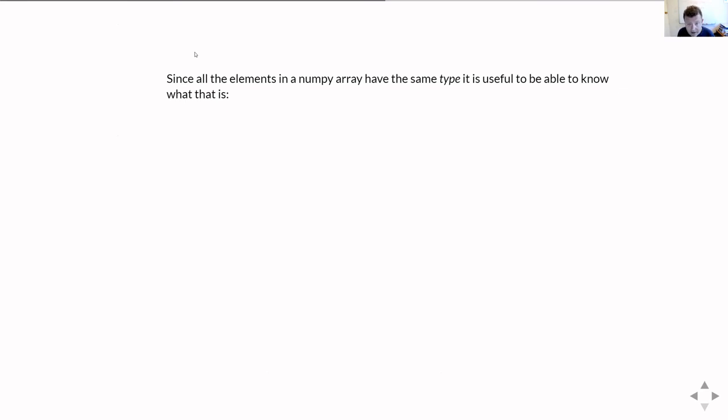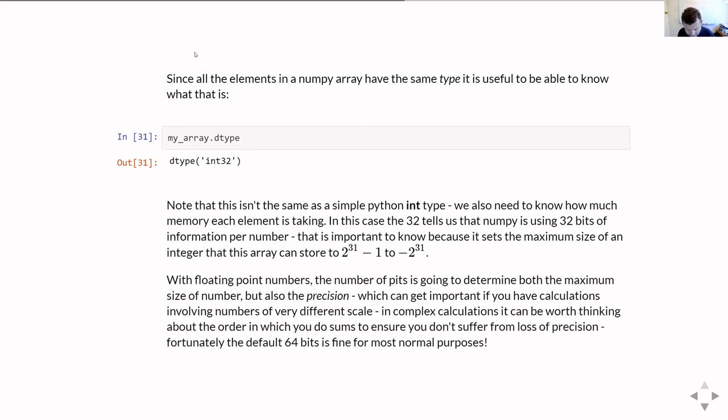Since all the elements of a numpy array have the same type, it's useful to know what that actually is. And that's given by .dtype. And it'll return a value. Now, the actual thing it's returning there is not a basic Python type. It's a numpy special value numpy dtype. And you see here, it says this is int32. Now, this might surprise you because we created this as int. So why is it saying int32 and not int? And that comes down to the fact that in numpy, the size of each element has to be fixed. And numpy has to know how big that element is.